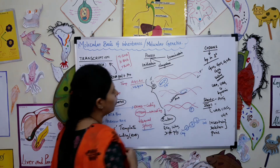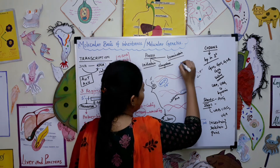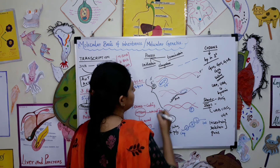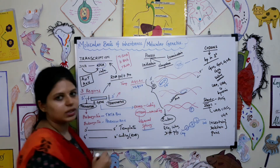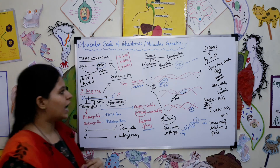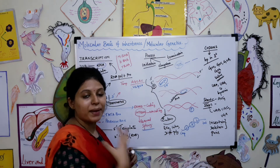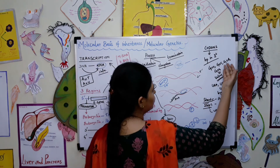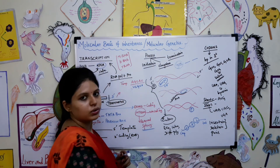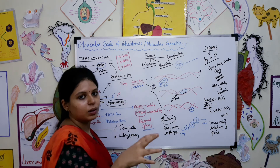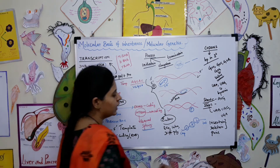An important topic is codons. Three consecutive base pairs are called a codon — for example, GUC is a codon, so it is also called a triplet codon. Each codon codes for a specific amino acid. For example, GUU, GUC, GUA, and GUG all code for valine. There are many codons coding for different amino acids, listed in a tabular column in your textbook.